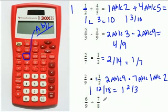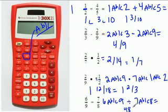And the last one, you would do 6 fraction key 9 divided by 7 fraction key 8. You would get 48/63, which is not in simplest form. So we need to make sure that we get into simplest form, which would be 16/21.